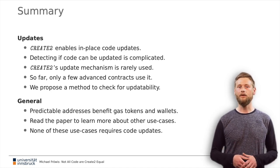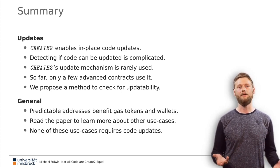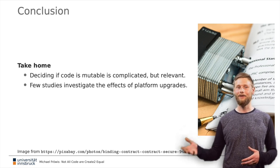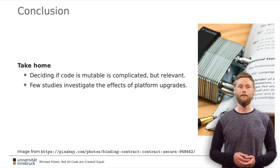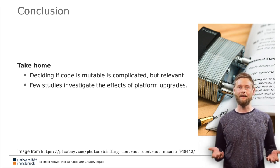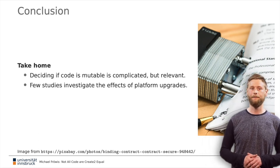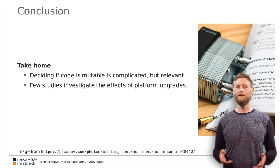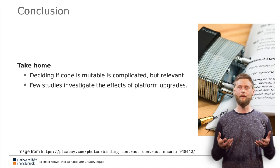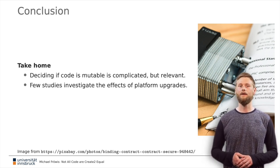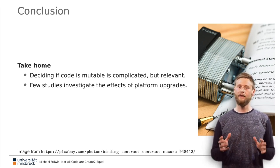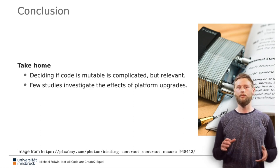None of these use cases depend on the update feature. Our take-home messages are twofold: first, users are in dire need for reliable ways to check if code remains immutable — it is striking that smart contracting platforms make this unnecessarily complicated for little apparent benefit. Second, given the value at stake on popular platforms like Ethereum, the potential impact of changes to the platform's fundamental logic calls for more research on protocol upgrades and their governance in general. We are only aware of a handful of papers that directly measure the effects of protocol changes.